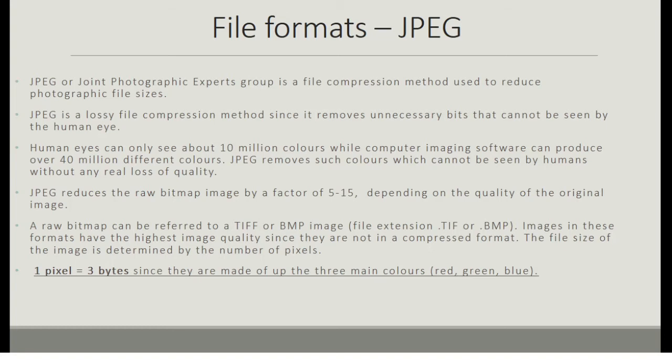A raw bitmap can be referred to as a TIFF or BMP image with the file extension .TIF or .BMP. Images in these formats have the highest image quality since they are not in compressed format. The file size of the image is determined by the number of pixels. It is important to remember that one pixel is equal to three bytes, since one pixel is made up of the three main colors: red, green, and blue. In the exam, you might be asked to determine the size of a file with a given number of pixels.